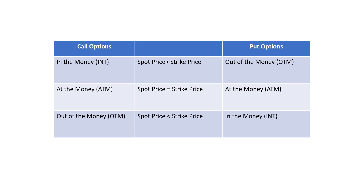Futures and options terms and techniques: spot price refers to the price available in the spot market for the underlying asset. Strike price is the agreed price at which a trade can be made on the underlying asset. When the spot price is higher than the strike price, a call option is said to be in the money (ITM). For a put option, when the spot price is lower than the strike price, it is in the money.